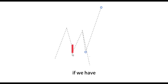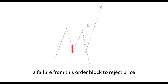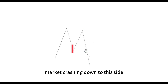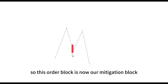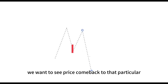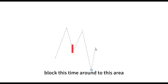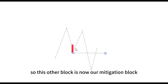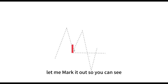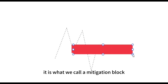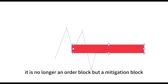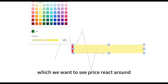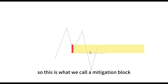But if we have a failure from this order block to reject price, we are eventually going to violate that order block and then we will have the market crashing down. So this order block is now our mitigation block — it is no longer an order block. We want to see price come back to that particular block and react around this level, pushing price downward. This order block is now what we call a mitigation block.